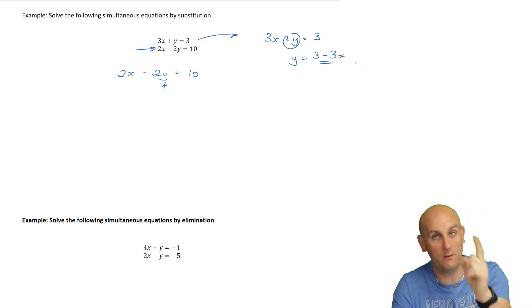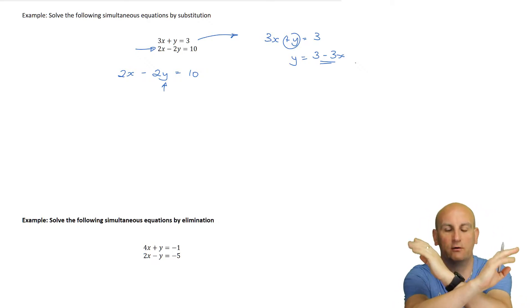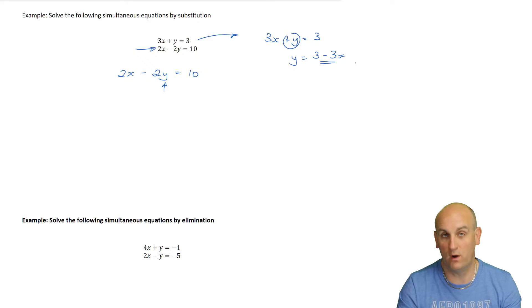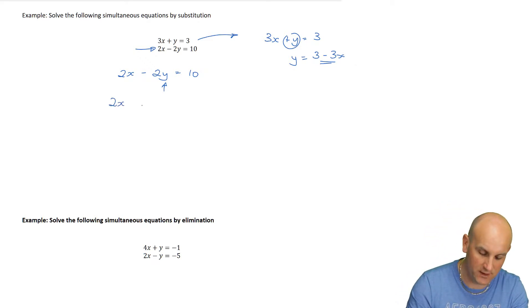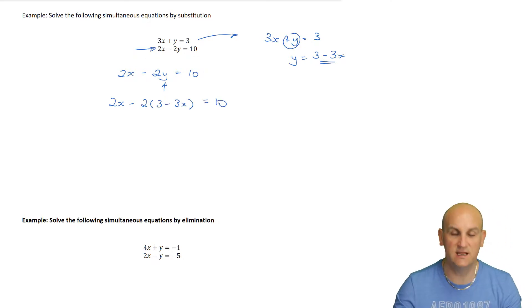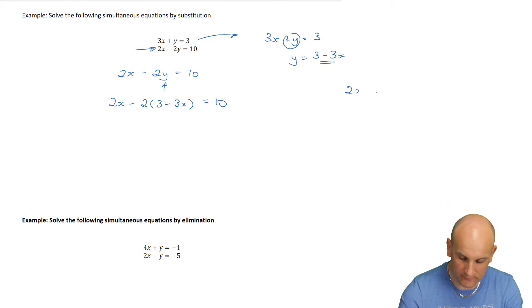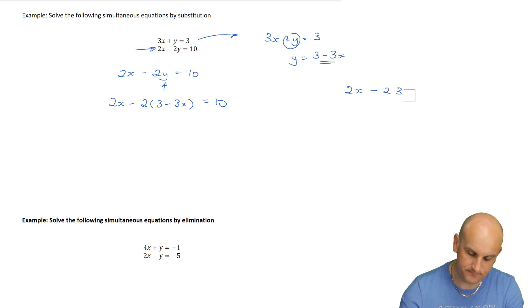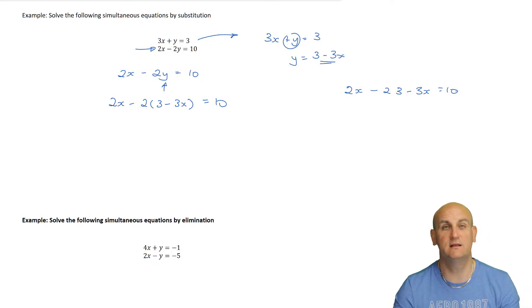So for that one crossing point where the x and y in both equations are the same, I get 2x minus 2 - and you must put this in brackets - of (3 minus 3x) equals 10. So many people skip the brackets, and in the heat of an exam, the minus sign won't take account of the minus inside, and it all goes horribly wrong.